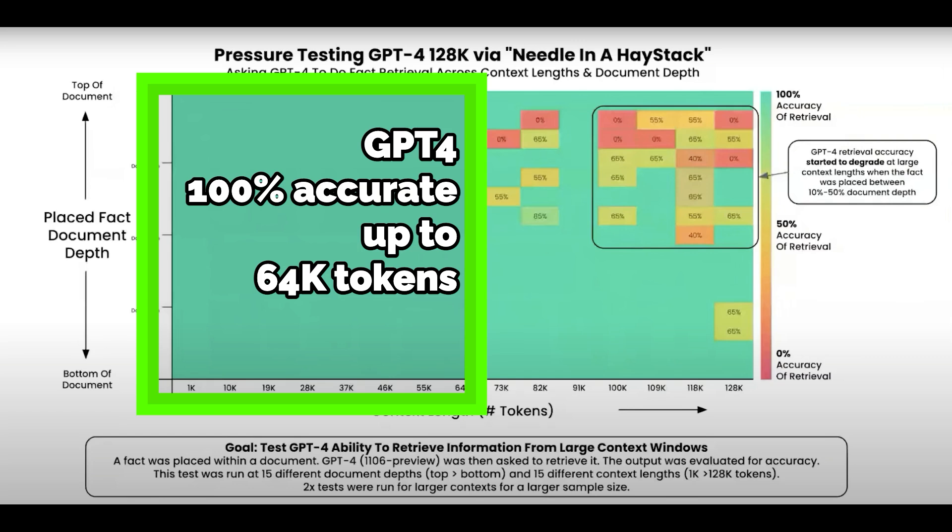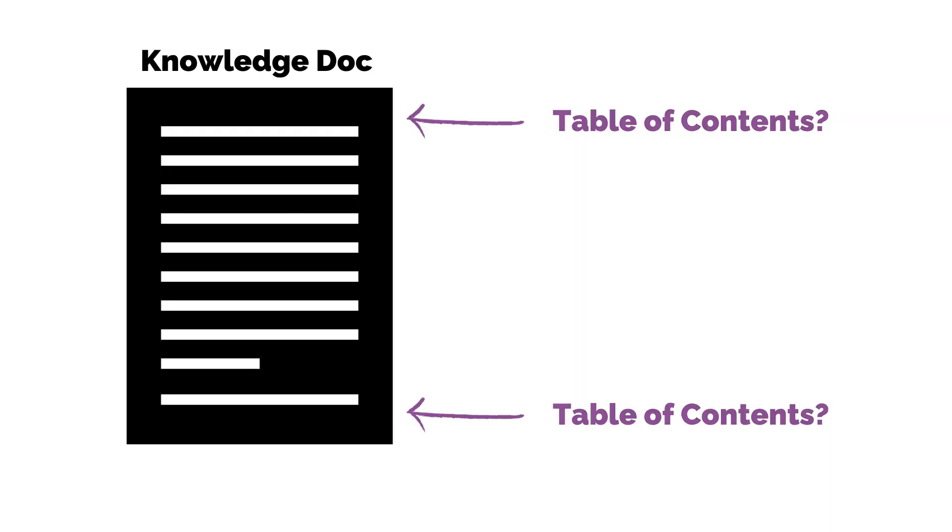GPT-4 showed stronger performance, with close to 100% accuracy up to 64,000 tokens — half of its total context window. So while Claude's window spans more overall tokens, its reliable capacity is likely less than half of GPT-4's based on this test.